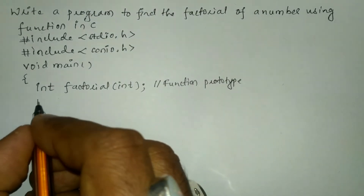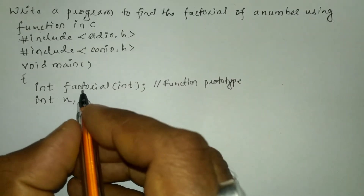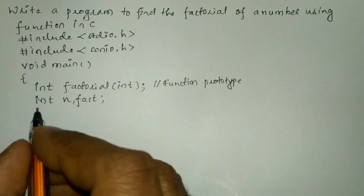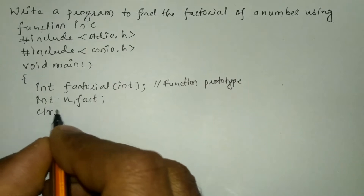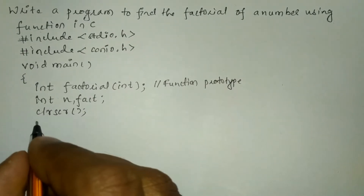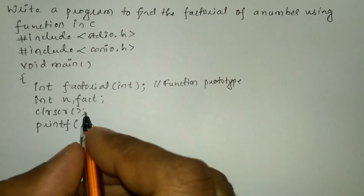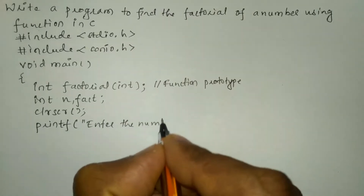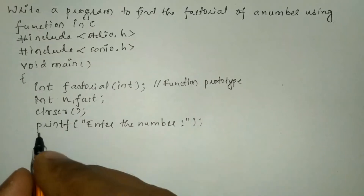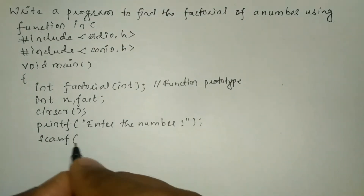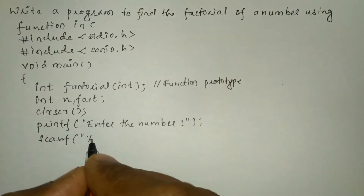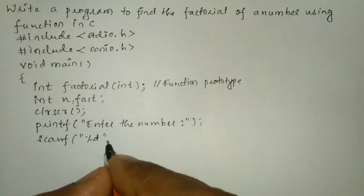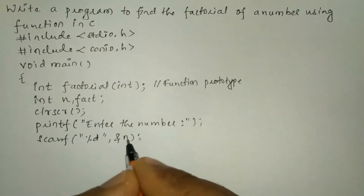Now we are going to declare the variables which are necessary for the program. n is the number and fact is a variable used to calculate the factorial. Next I will write the clrscr function to clear the screen, then ask the user to enter the number using printf. We receive the response from the user through the keyboard using scanf, passing the format specifier with ampersand n and a semicolon.